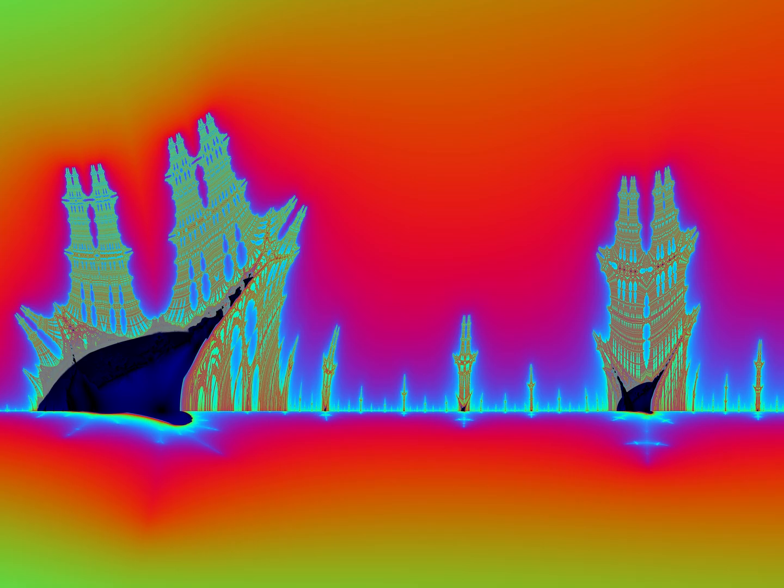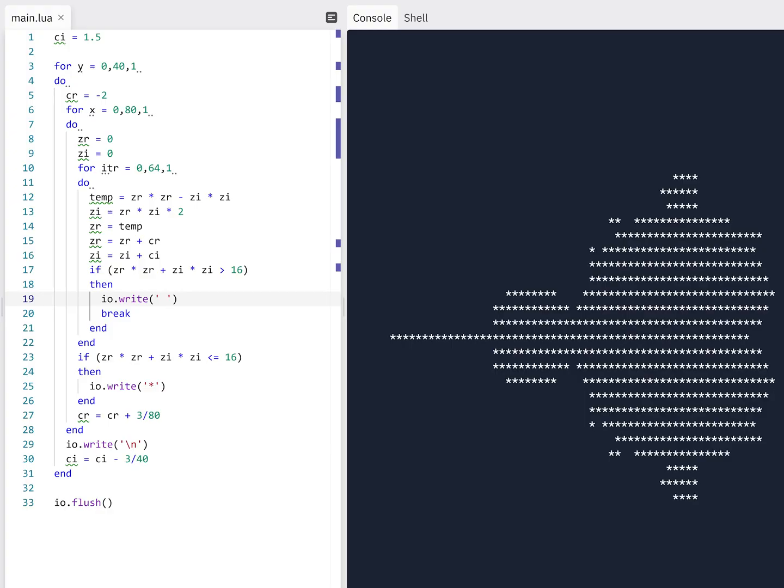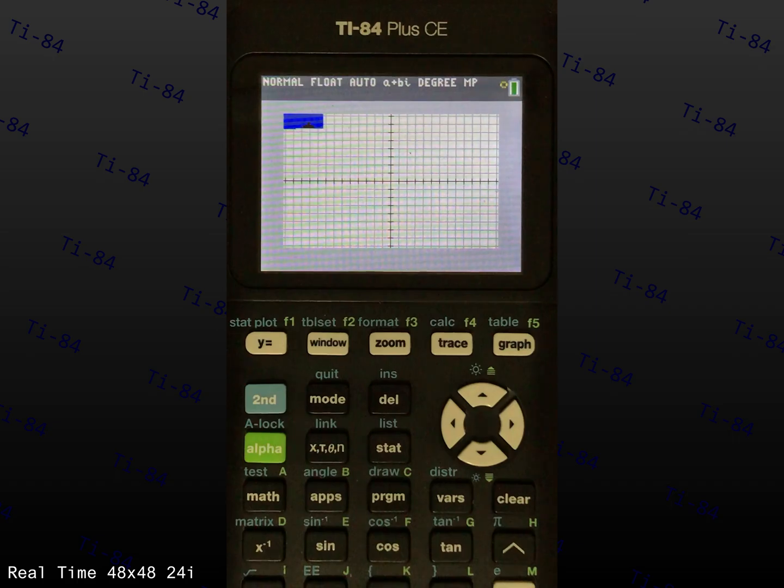For the final program that I'll show today, the Mandelbrot set is an obsession of mine. I have made it in Scratch, JavaScript, Java, C++, and Lua, and by far TI Basic is the slowest.